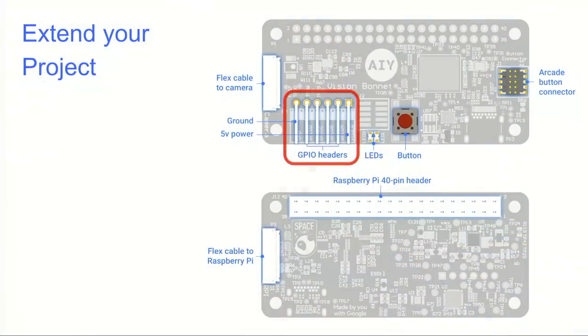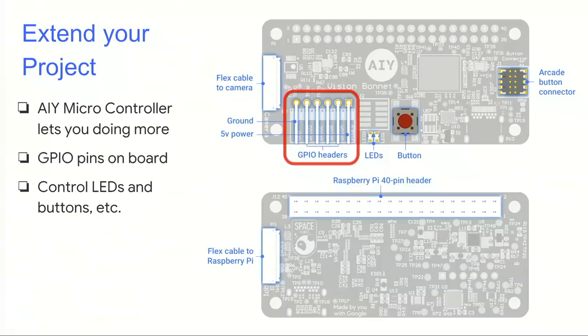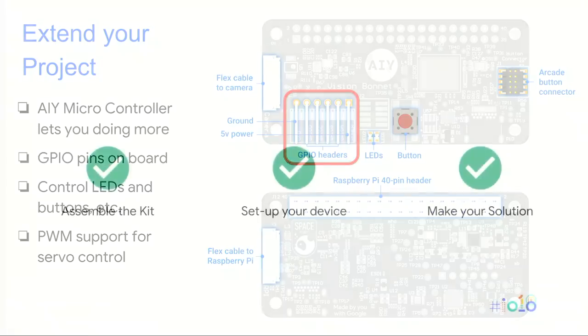Let's talk about extending your project. On the AIY Vision Bonnet board, in the red circle area, there are additional GPIO pins. With those pins you can control output — turn on lights, turn on fans, make noise, whatever you could do. So with these things you could expand your project significantly. Hardware-wise, as a maker, there's a lot more you can do.